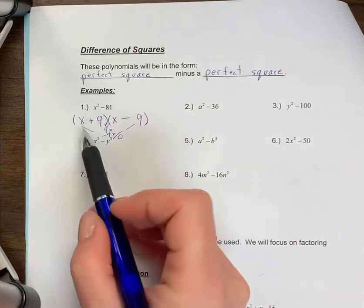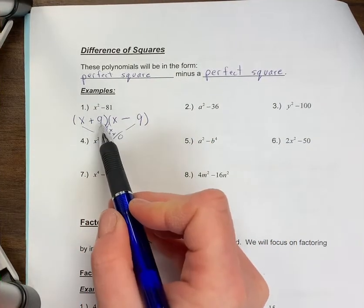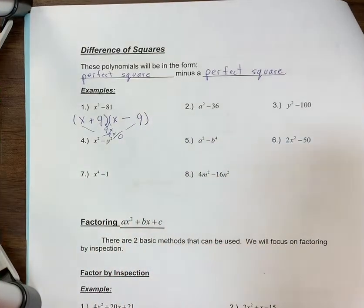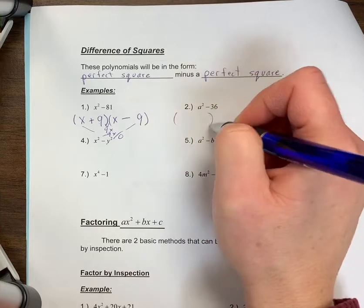So whenever you do difference of squares, you square root the first term, the signs are plus or minus, and you square root the second term. That's what we're going to do throughout each of these examples. Let's look at example two together.